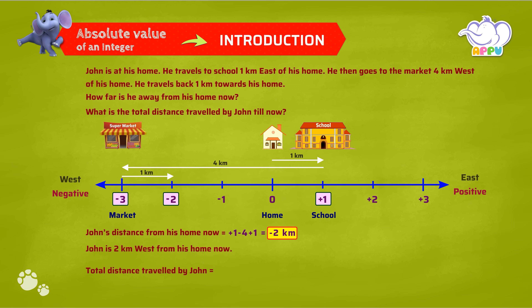To find the total distance traveled by John, we add the absolute values — that is the numbers without their signs. Absolute value of 1 plus absolute value of 4 plus absolute value of 1, which is 1 plus 4 plus 1 equals 6 km. So John travels 6 km in total.